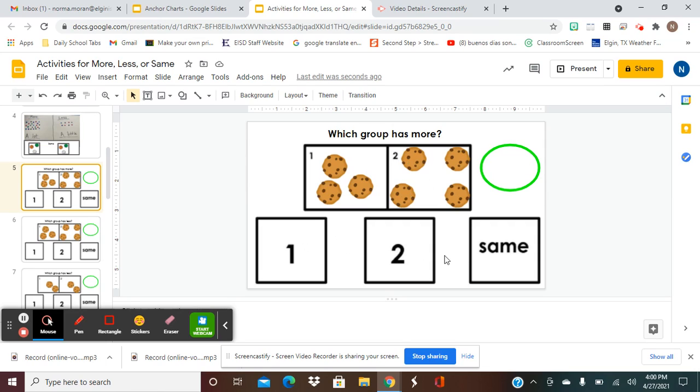Is it group one, group two, or they both have the same? Try to give me the answer before I move the circle to the correct answer. And group number two has more. This one has more cookies. Group two has more cookies than group one. All right, let's go to the next question.